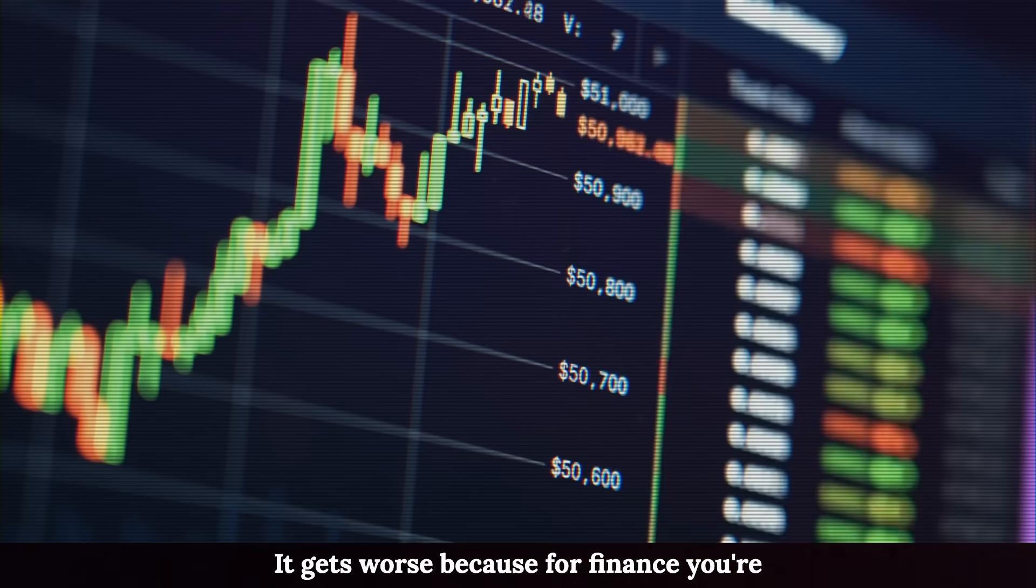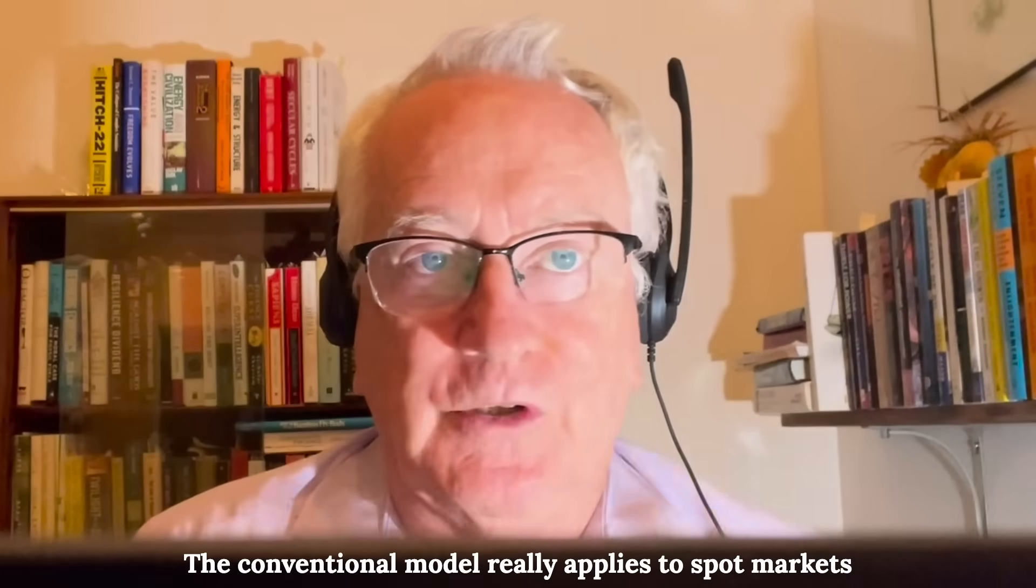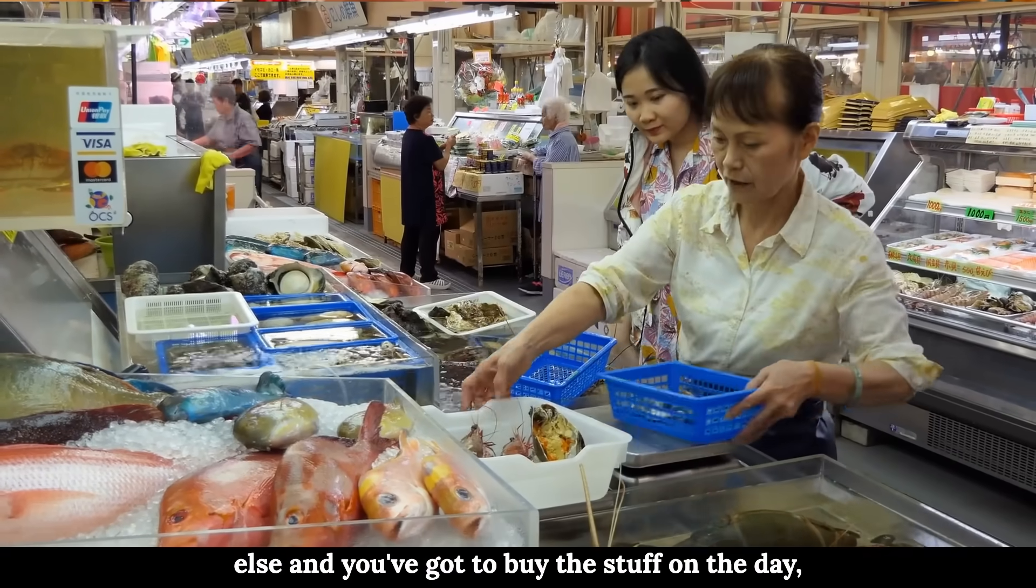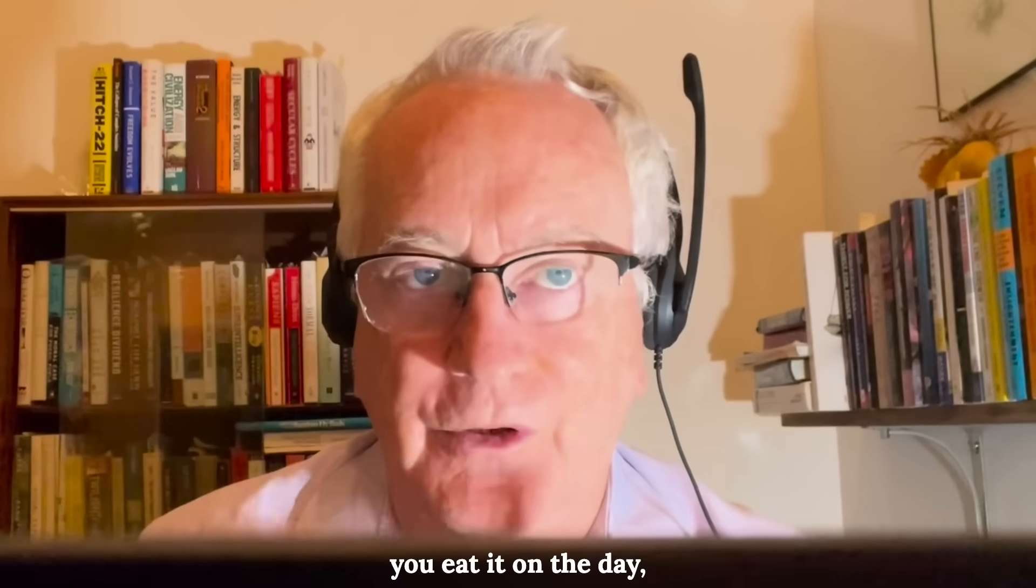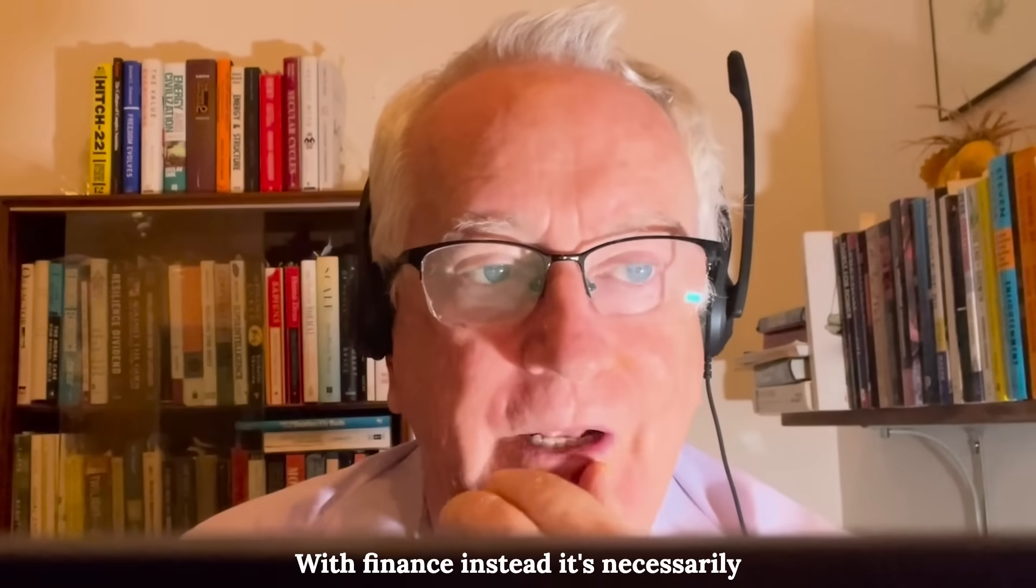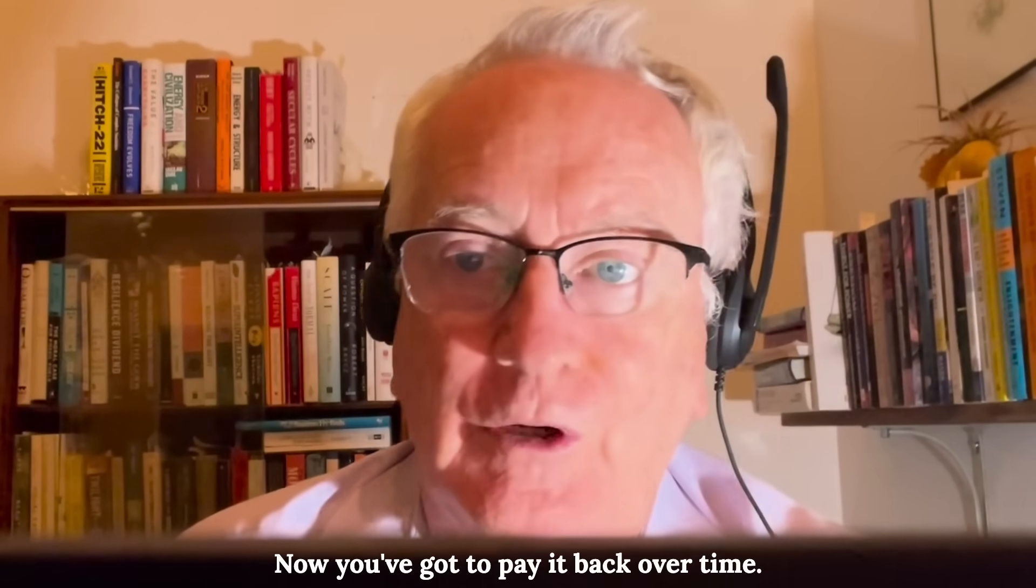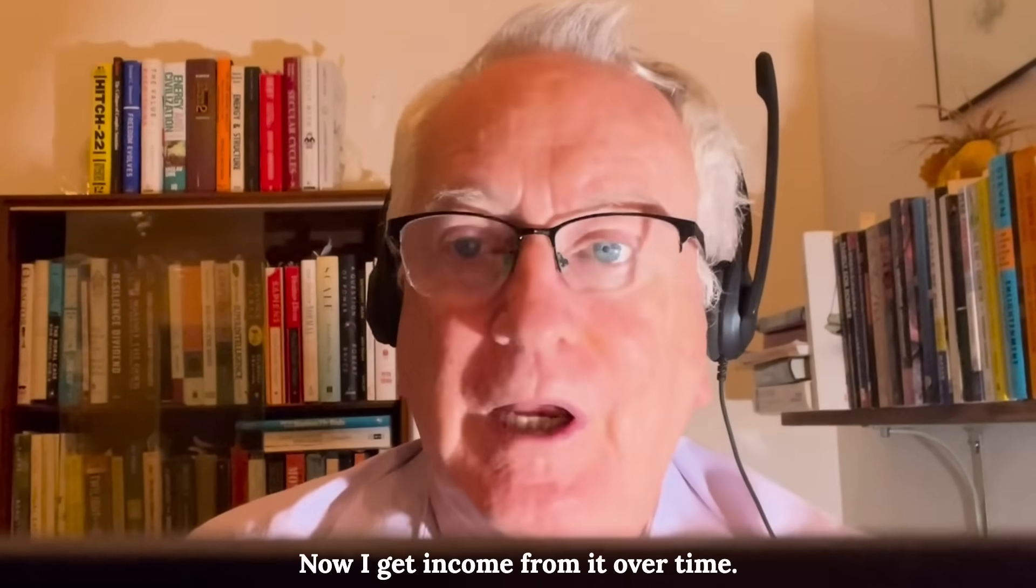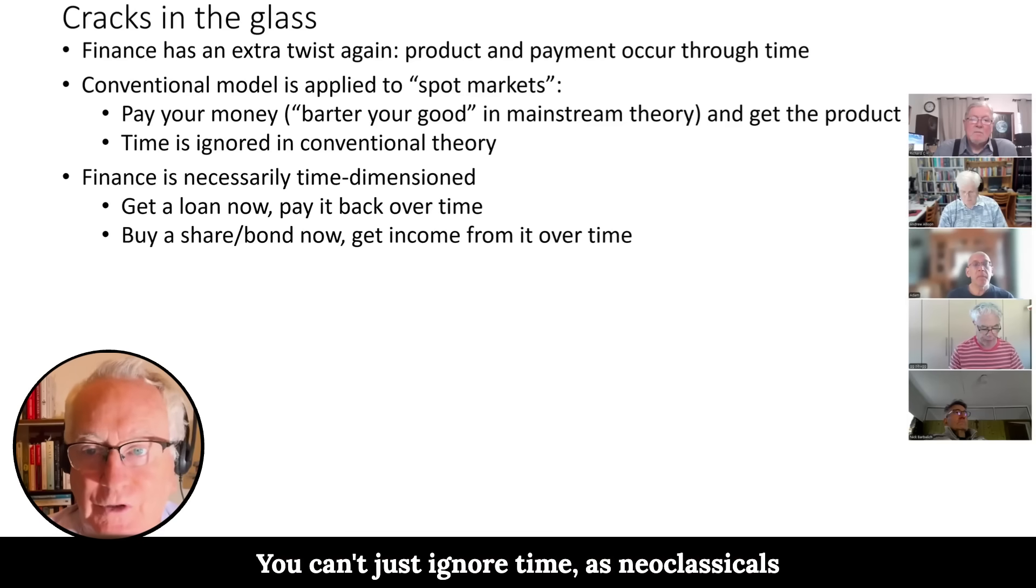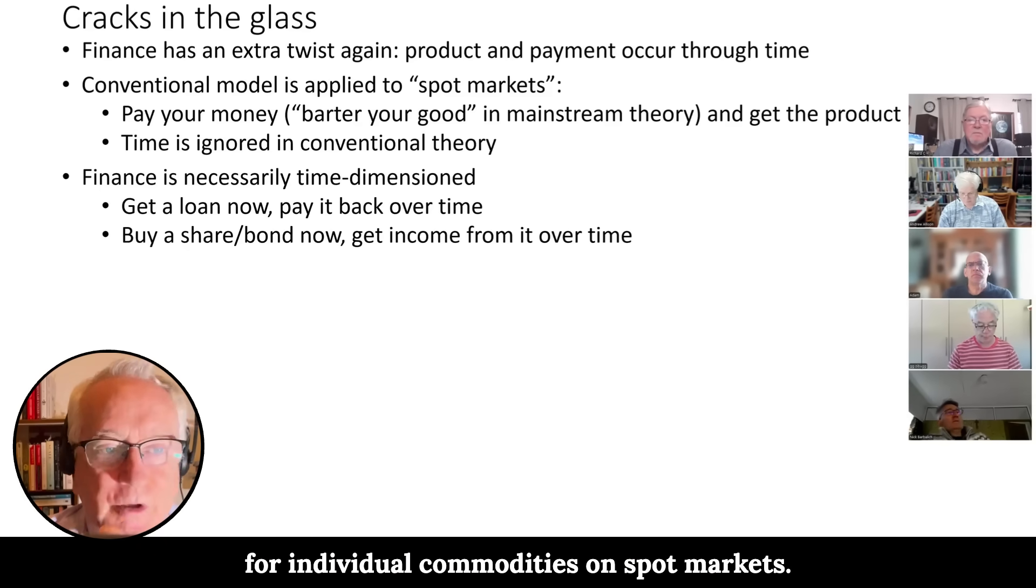Because for finance you're not buying and selling on a spot market. The conventional model really applies to spot markets, where you can go down to a fish market or whatever else, and you've got to buy the stuff on the day, you buy it, you eat it on the day, else and you've got to buy the stuff on the day, there's no time element to it. And that's not at all what happens with finance. With finance instead, it's necessarily time dimension. You get a loan now, you've got to pay it back over time. You buy a share or a bond now, you get income from it over time. So time is an inevitable part of those markets. You can't just ignore time as neoclassicals do when they talk about supply and demand for individual commodities on spot markets.